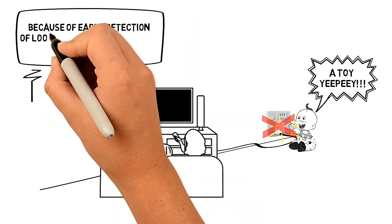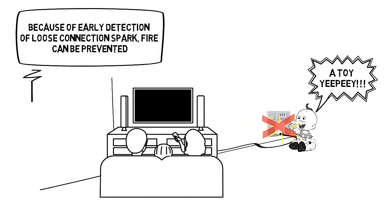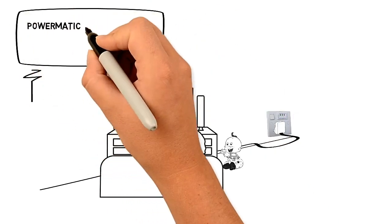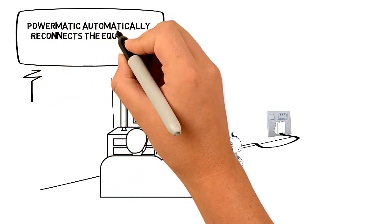Because of early detection of loose connection spark, fire can be prevented. Powermatic automatically reconnects the equipment when it is stable again.